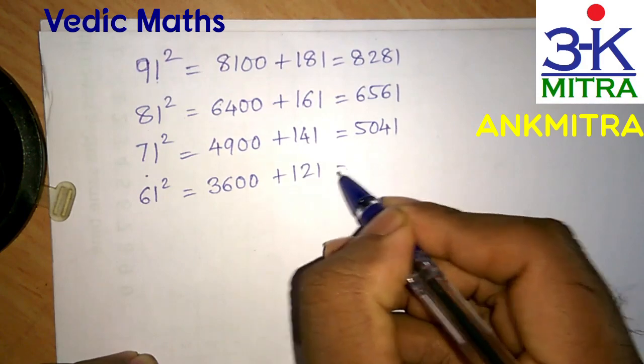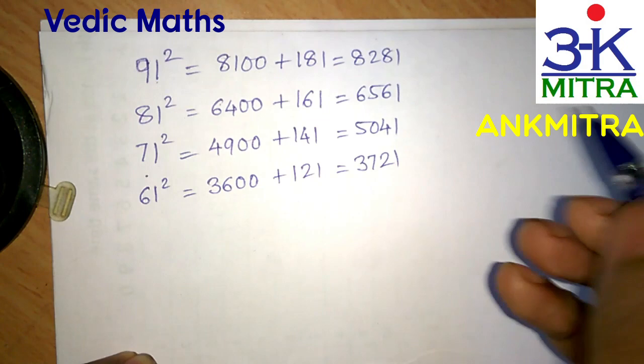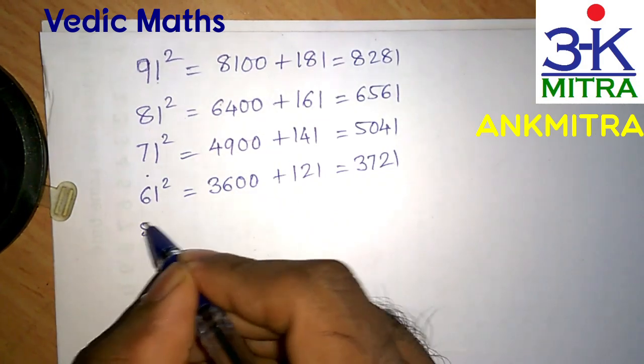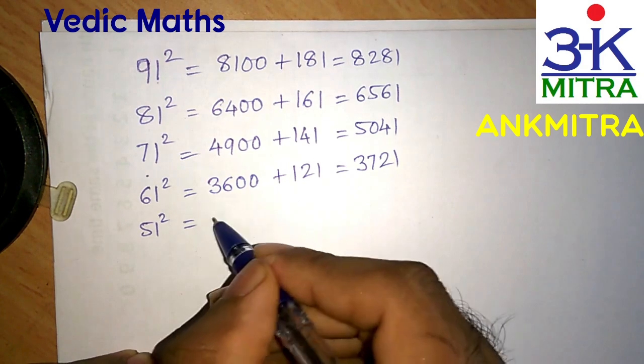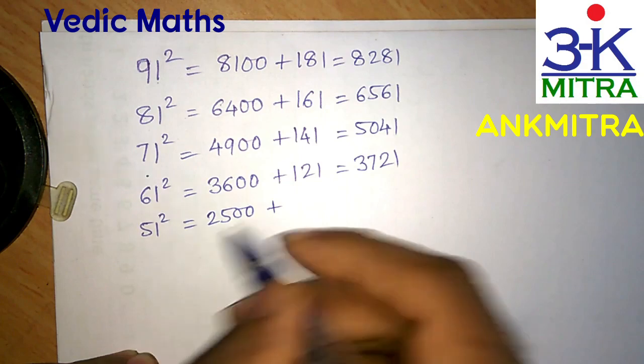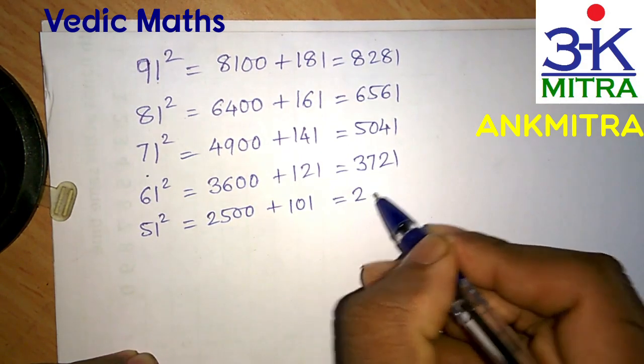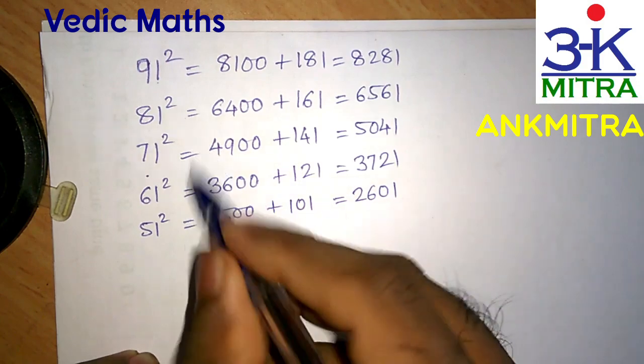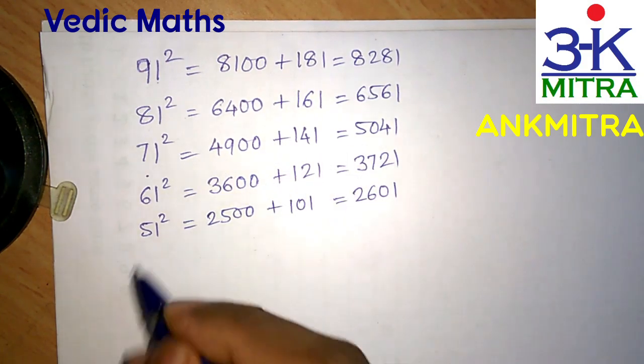Let's take another example: 51 squared. First write down the square of 50, which is 2500, then add the sum of 50 and 51, which is 101. The answer is 2601. This same trick can be applied to any three-digit number as well.